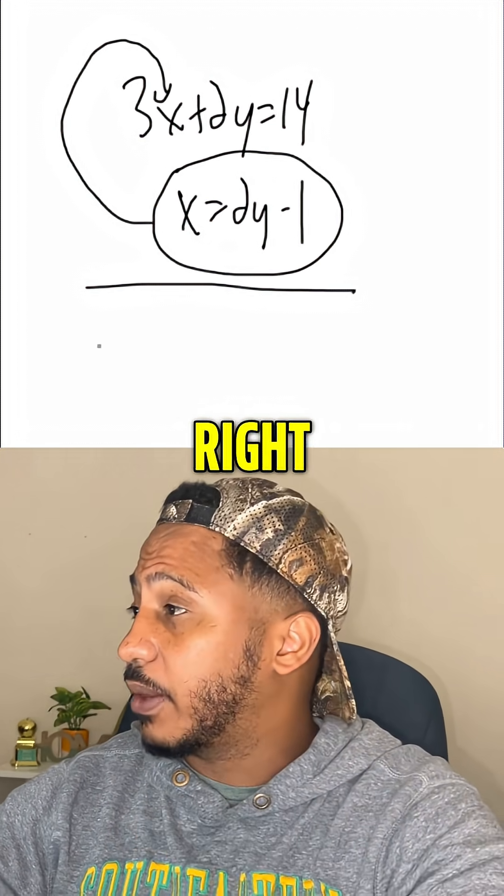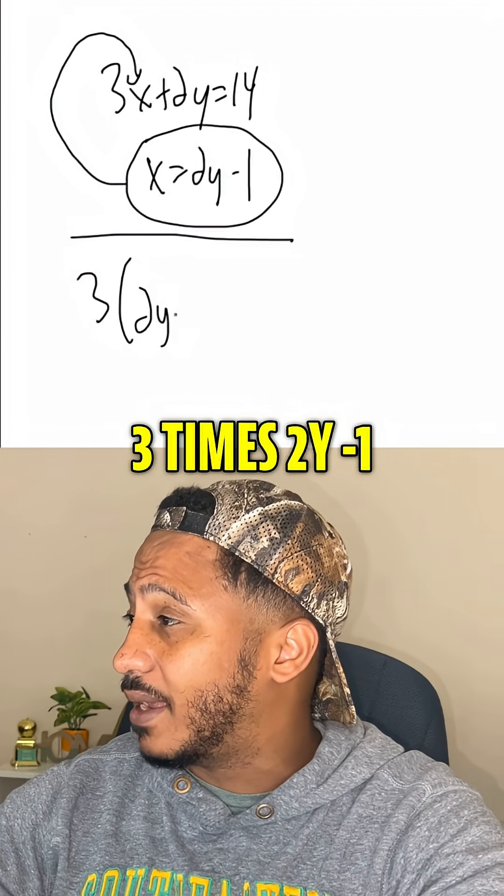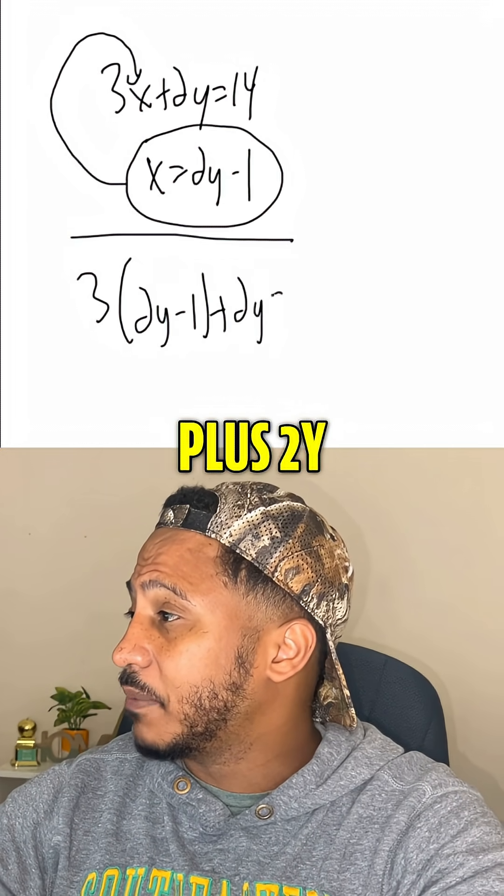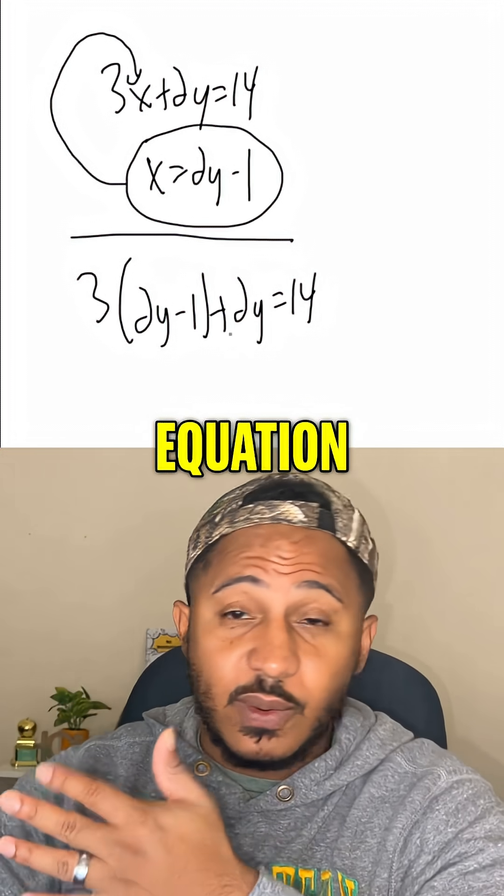This creates one equation, one variable. We end up with 3 times 2y minus 1 plus 2y equals 14. One equation, one variable, a lot easier to solve.